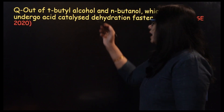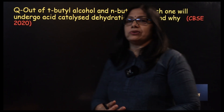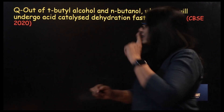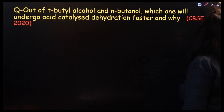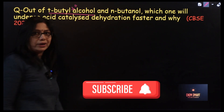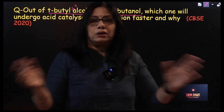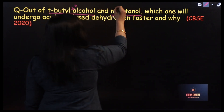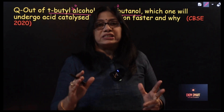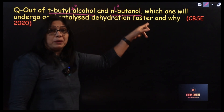Question number 1: Out of tertiary butyl alcohol and N-butanol, which one will undergo acid-catalyzed dehydration faster and why? It was asked in 2020. Let us see the nature of these two alcohols. Tertiary butyl alcohol, as the name indicates, is a tertiary alcohol. N-butanol means it is butan-1-ol, normal butyl alcohol, which is primary. You have studied that a tertiary carbocation is the easiest to form during the reaction, compared to primary and secondary.